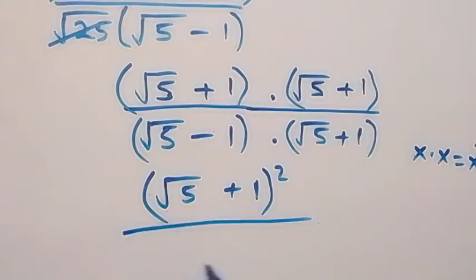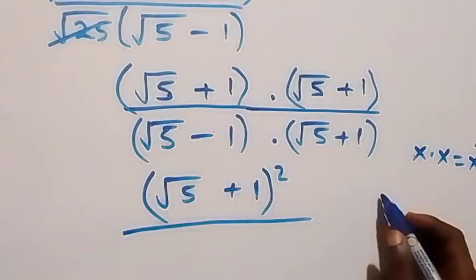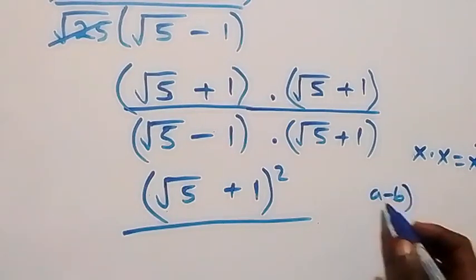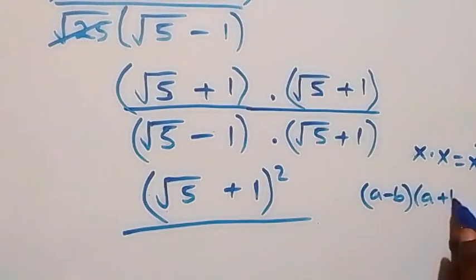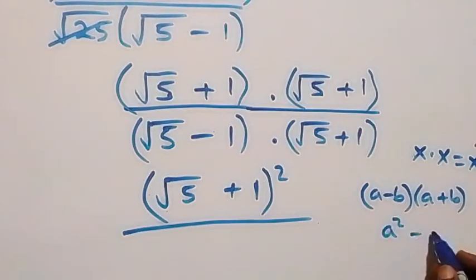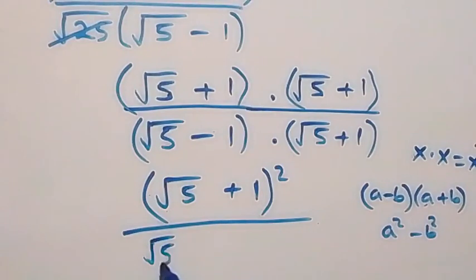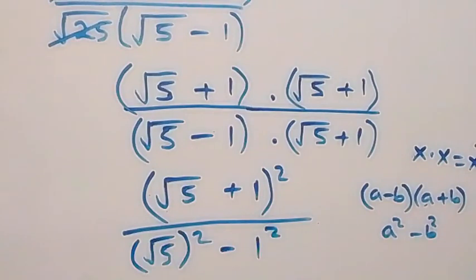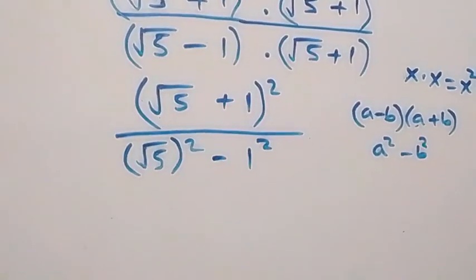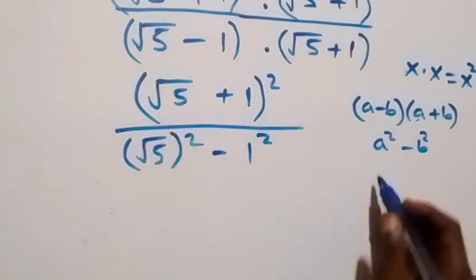Divided by what we have here — this follows from when we have a minus b multiplied by a plus b, which can be written as a squared minus b squared (difference of squares). Here root 5 serves as a and 1 serves as b, so we have root 5 squared minus 1 squared. If you're enjoying this class, please give a thumbs up and subscribe for more videos.